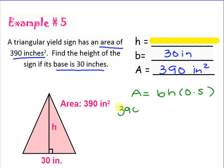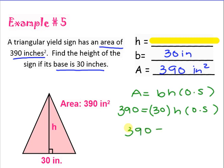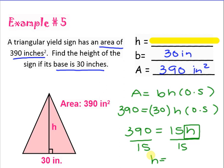Let's fill in what we know. Area is 390, base is 30 — remember we always put things in parentheses — height is unknown, and 0.5 is known. Since this is all multiplied together, let's multiply what we can: 30 times 0.5 is 15. So 390 equals 15h. Now we have a one-step equation. Box your variable, divide both sides by 15, and you get h equals 26 inches. It's not inches squared because we're not finding the area — it's just inches because we're finding the height.